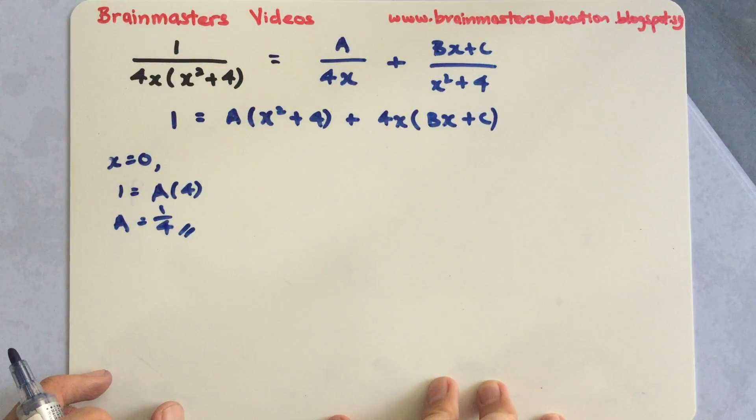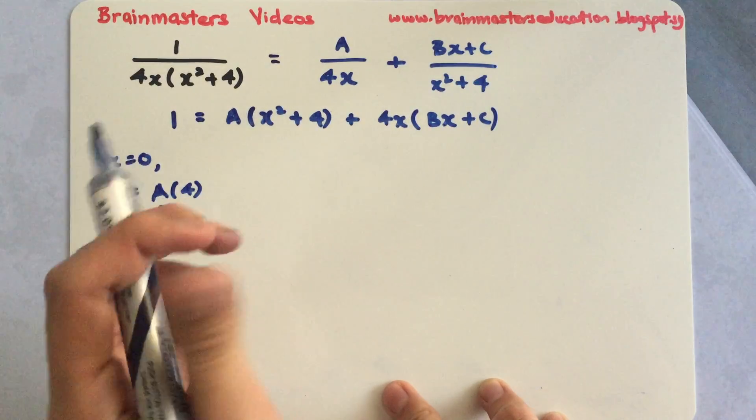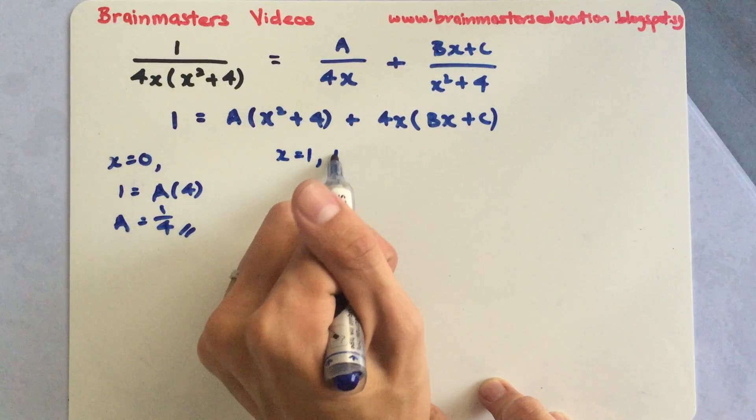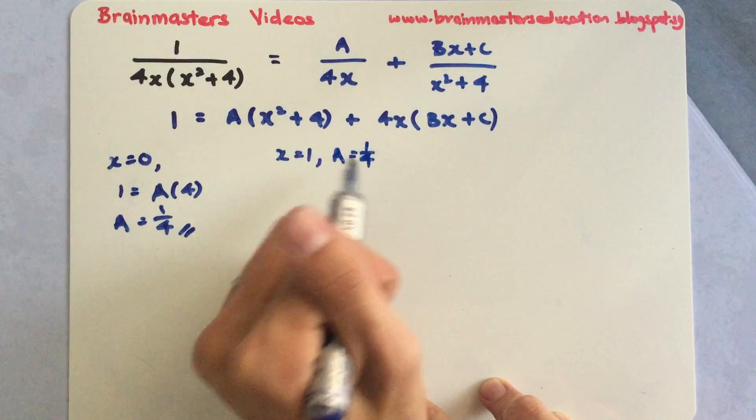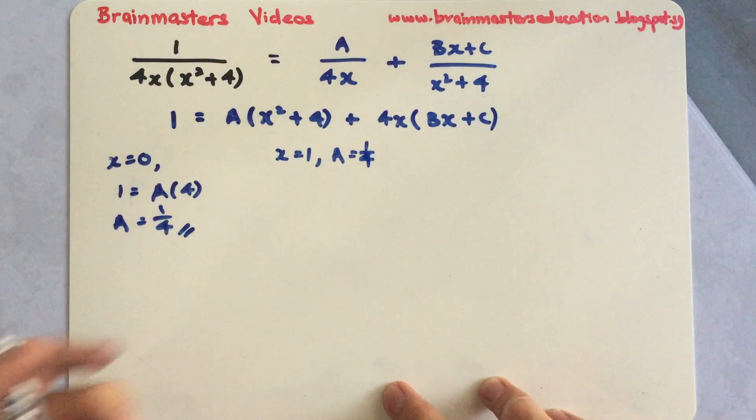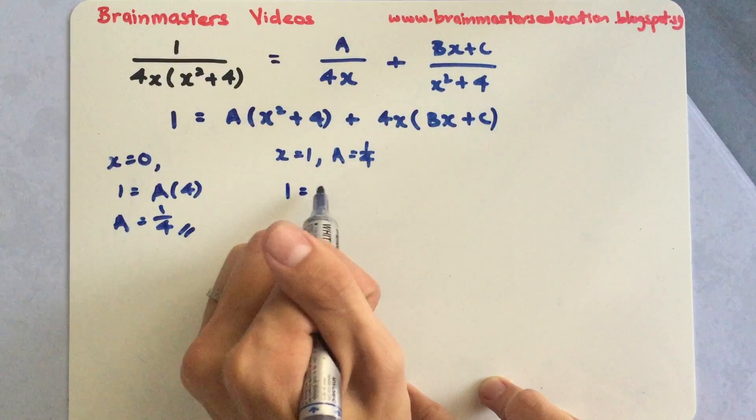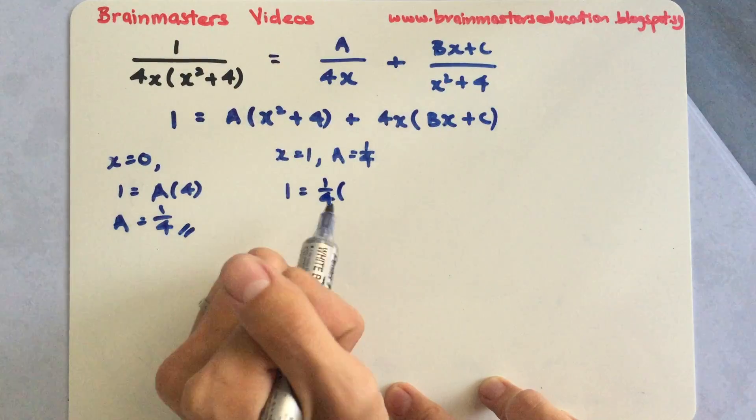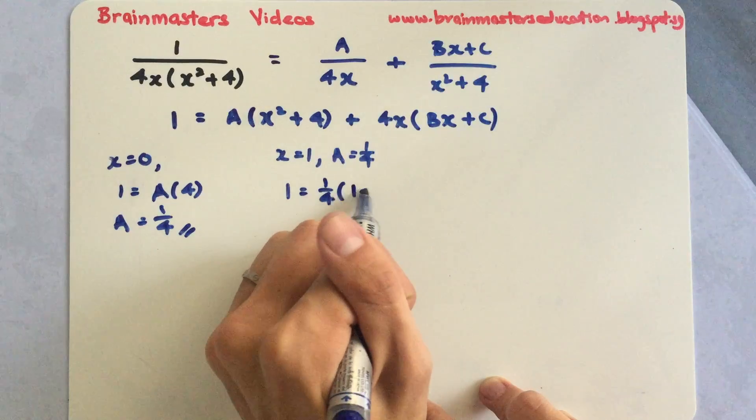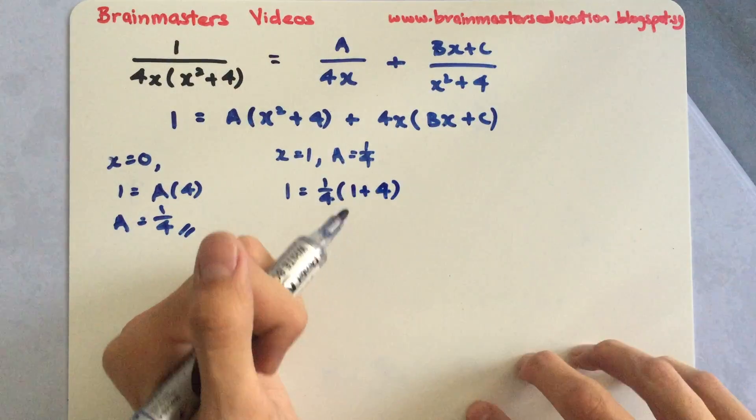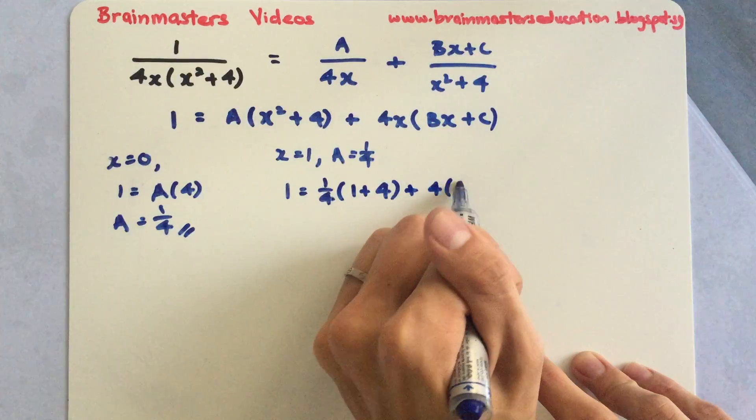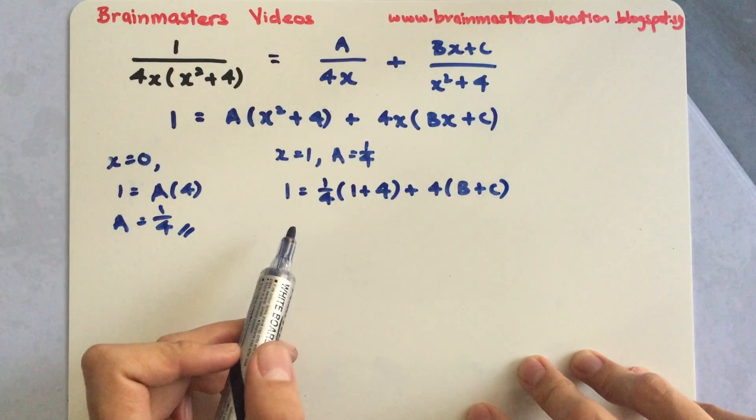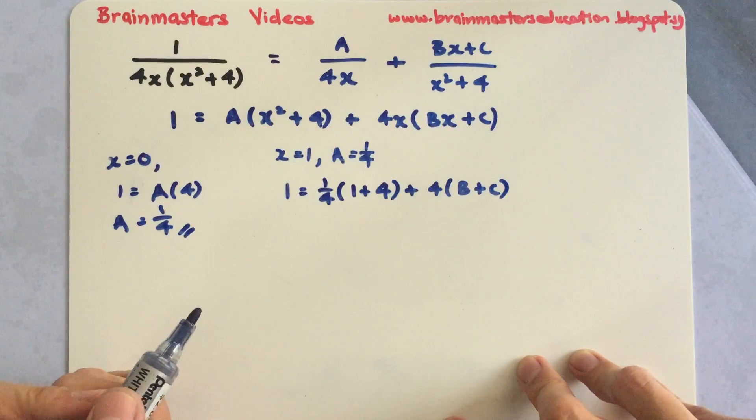Next, what I will have is I will substitute x equals to 1 and A equals to 1 over 4 since I found my A. So 1 equals to 1 over 4 times, 1 squared is 1 plus 4, multiplied to 4 times B plus C. What I will do is simplify everything and then make this into my equation 1.